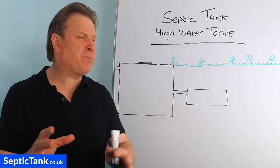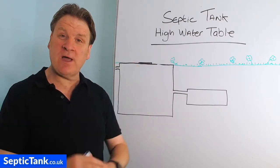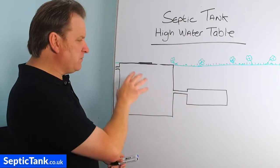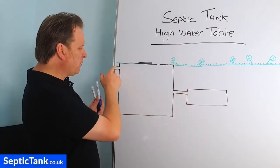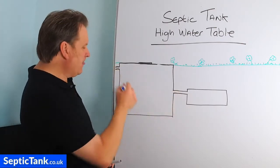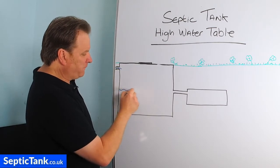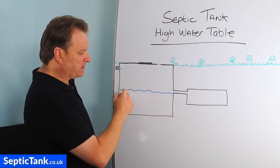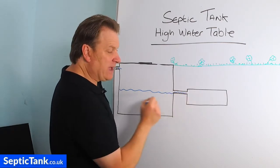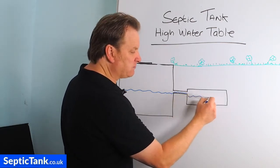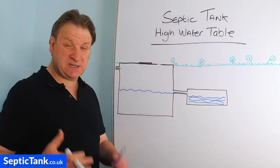First, let me show you the problems that come from living in an area where the water table is quite high. This is your septic tank and this is your soak away. You've got your inlet pipe and your outlet pipe. Water comes into the septic tank and fills up to a certain level — this is your wastewater. It then makes its way down the outlet pipe and into the soak away. That's how a septic tank and soak away work.